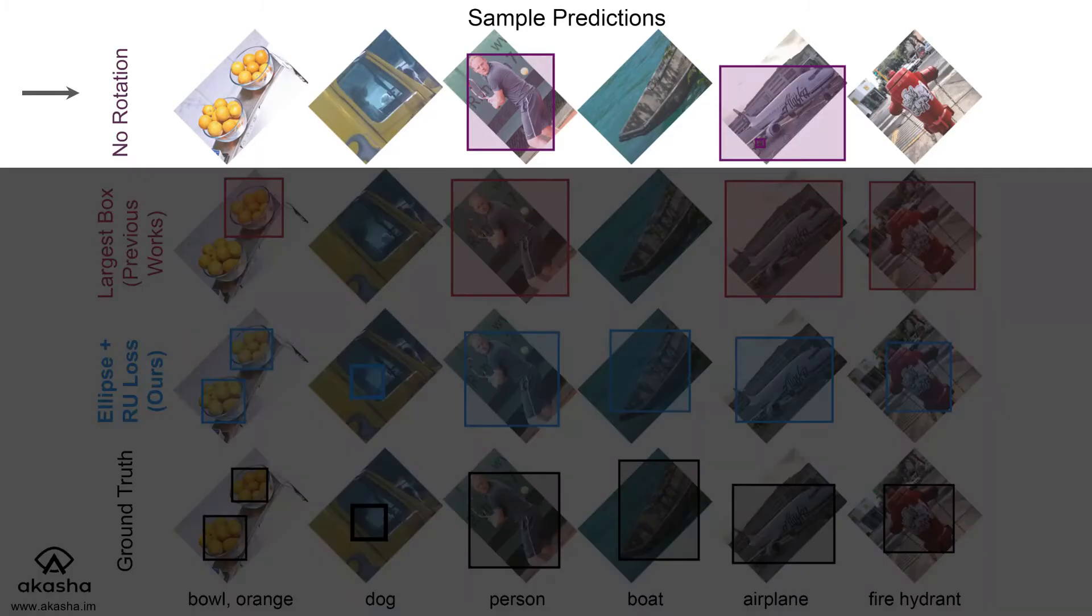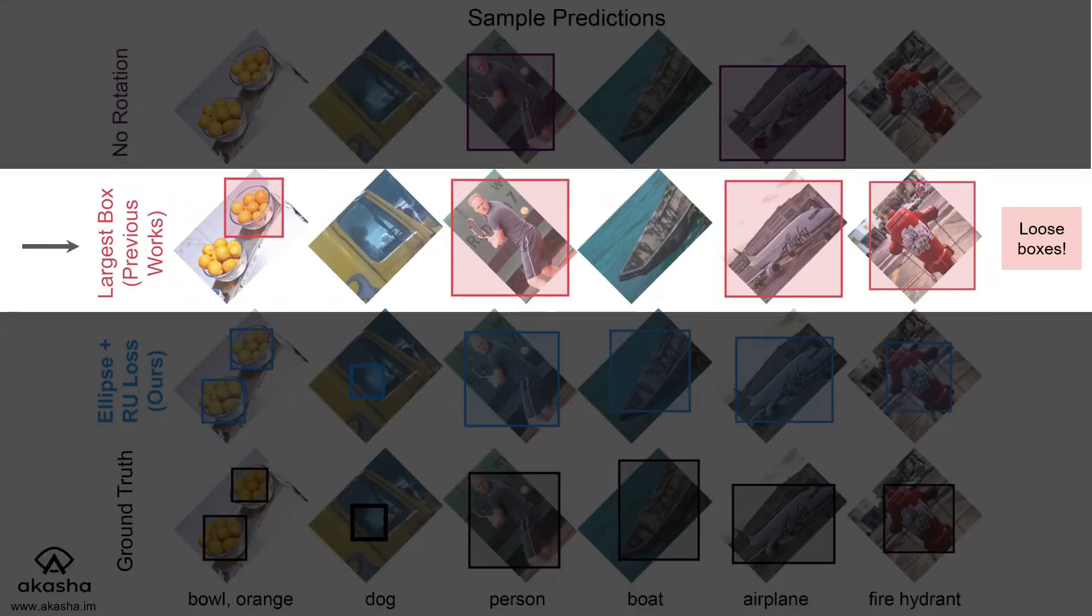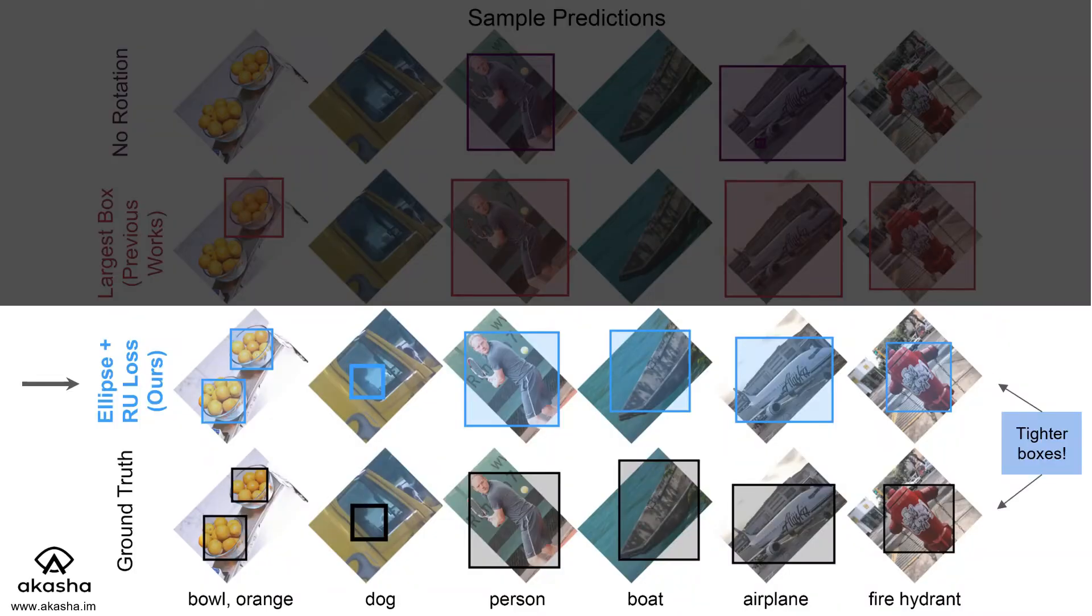For example, if we train an object detection model without rotation augmentations, the model struggles to recognize the majority of rotated objects. If we train a model using the largest box method, which is the existing method of rotation augmentations, then even though we may detect more objects, the boxes will be too big. We propose a novel method that allows us to get tighter boxes and many more detections.